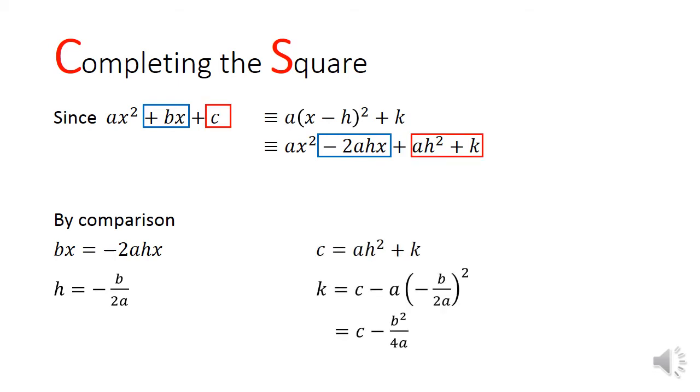Next, I compare the constant terms together, highlighted in red. This will give me k equals to c minus b square over 4a. Lastly, I substitute both of these parts back into the vertex form, getting this formula.